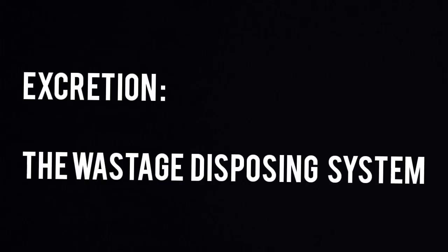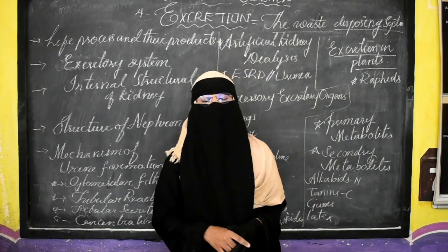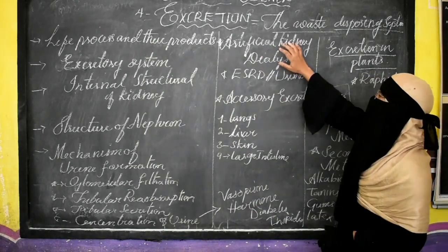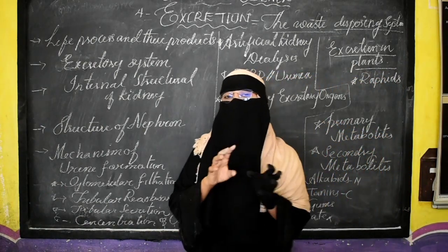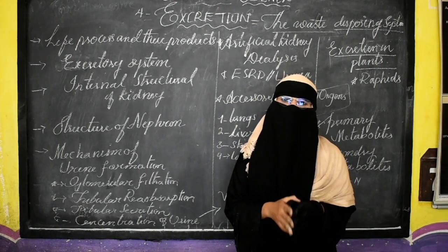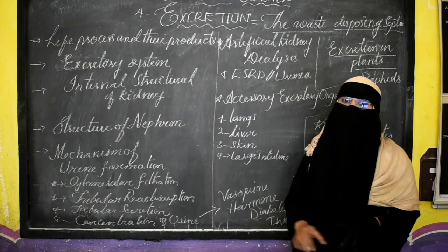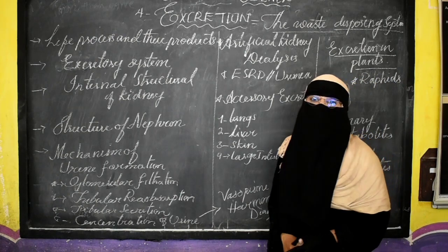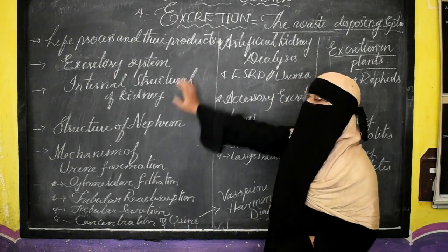Hello students, we are now on the fourth chapter — excretion, the waste disposing system. Every organism's body balances ions, salts, and water through metabolic activities — anabolism and catabolism — during which many wastes get generated. Here we will discuss human excretion, and also briefly cover plant excretion, including alkaloids and primary and secondary metabolites. During digestion, amino acids, glucose, and many other things are absorbed into the body, and during photosynthesis oxygen is liberated and carbohydrates are prepared.